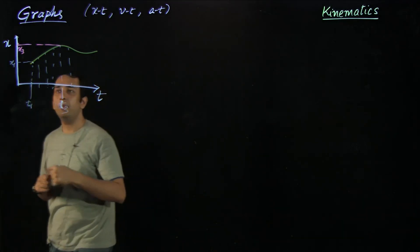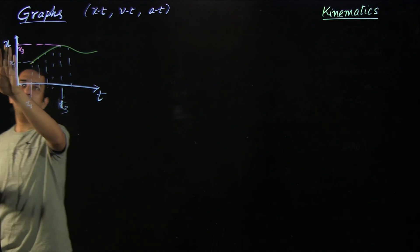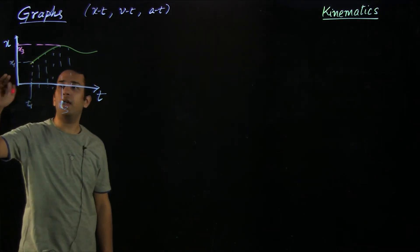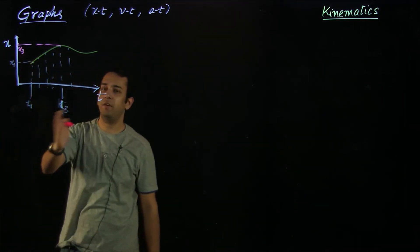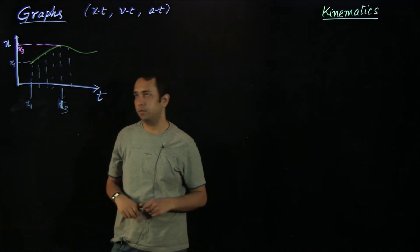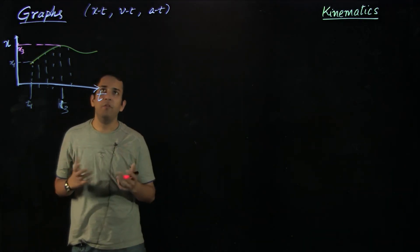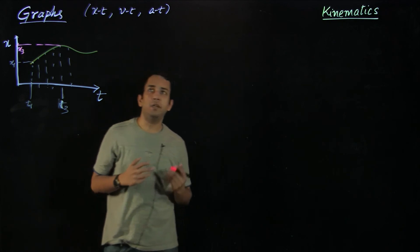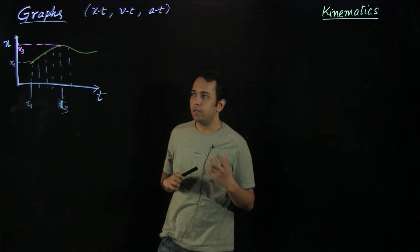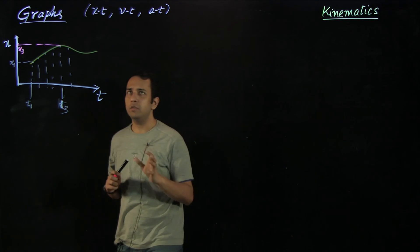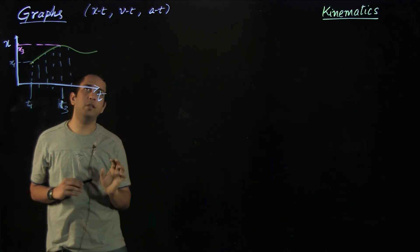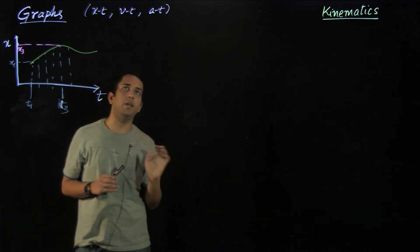Similarly, if instead of plotting x I am plotting velocity, then I can find out different velocities at different time instants. And similarly for acceleration as well. So that is what we mean by xt, vt, and at graphs. Now let us see a couple of properties of the graphs through which we will be able to interpret a lot of information from xt, vt, and at graphs.